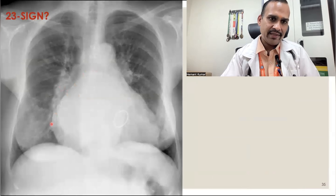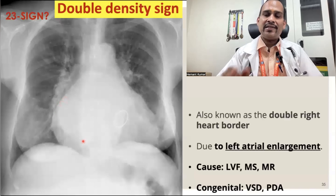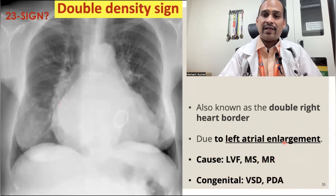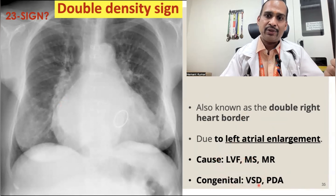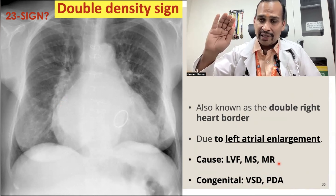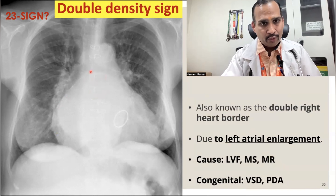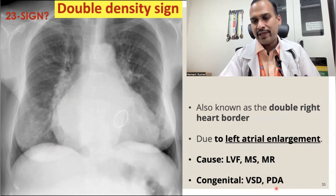Sign 23 is the double density sign. You can see two opacities along the right heart border — an outer one and an inner one. It is seen whenever there is enlargement of the left atrium. Because of left atrial enlargement, the left atrium — which is posterior — comes toward the right side, giving two densities. Conditions causing left atrial enlargement include left ventricular failure, mitral stenosis, and mitral regurgitation. This is seen in pediatric cases — congenital VHD and PDA.